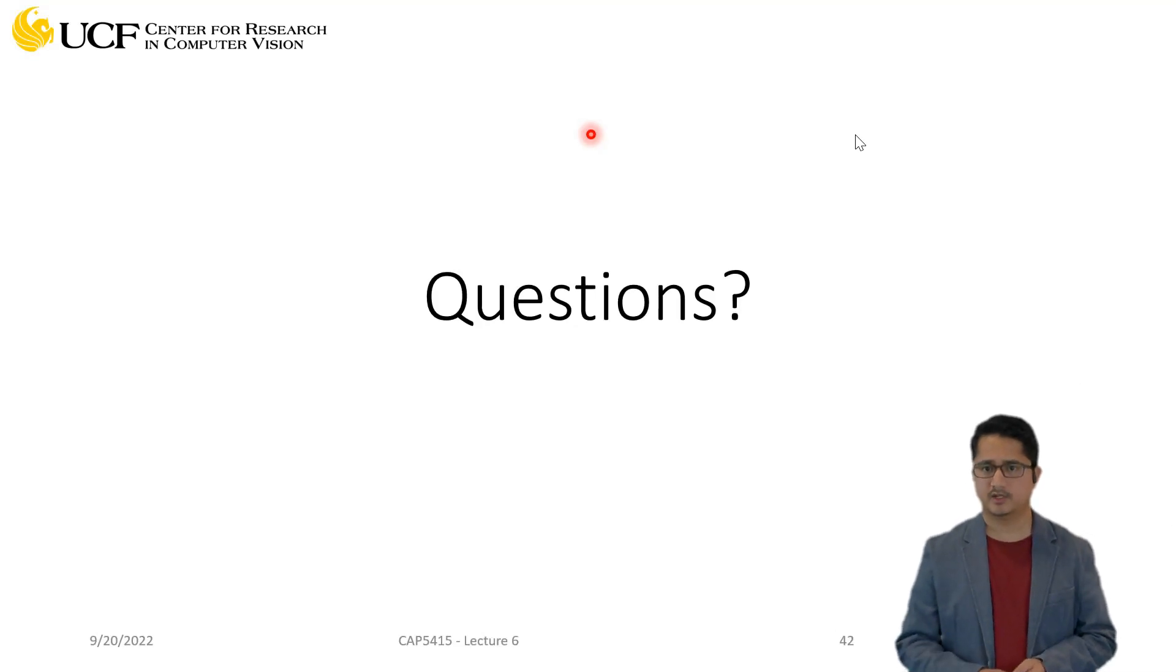We have a question from preview: can you give an example of input where the channels might be more than three? Yeah, Chase already answered that question. CMYK could be one. You can have your RGB color and you can attach depth to it.